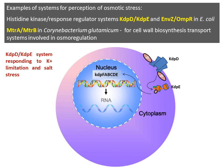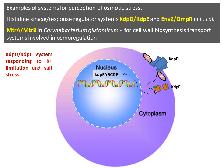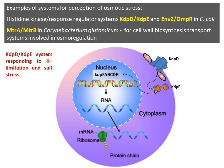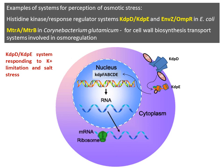As an example, when there is a change in osmotic potential, the histidine kinase sensor on the membrane, termed KdpD, gets phosphorylated and transmits this signal to the response regulator KdpE. KdpE can then influence transcription from a gene operon called kdpFABCDE.